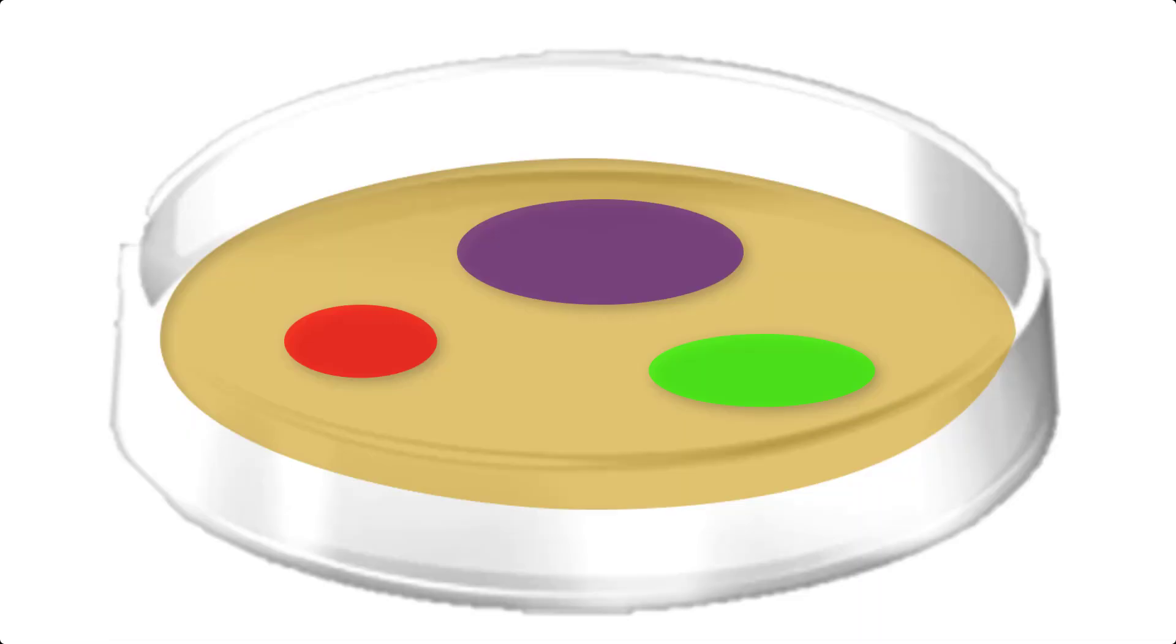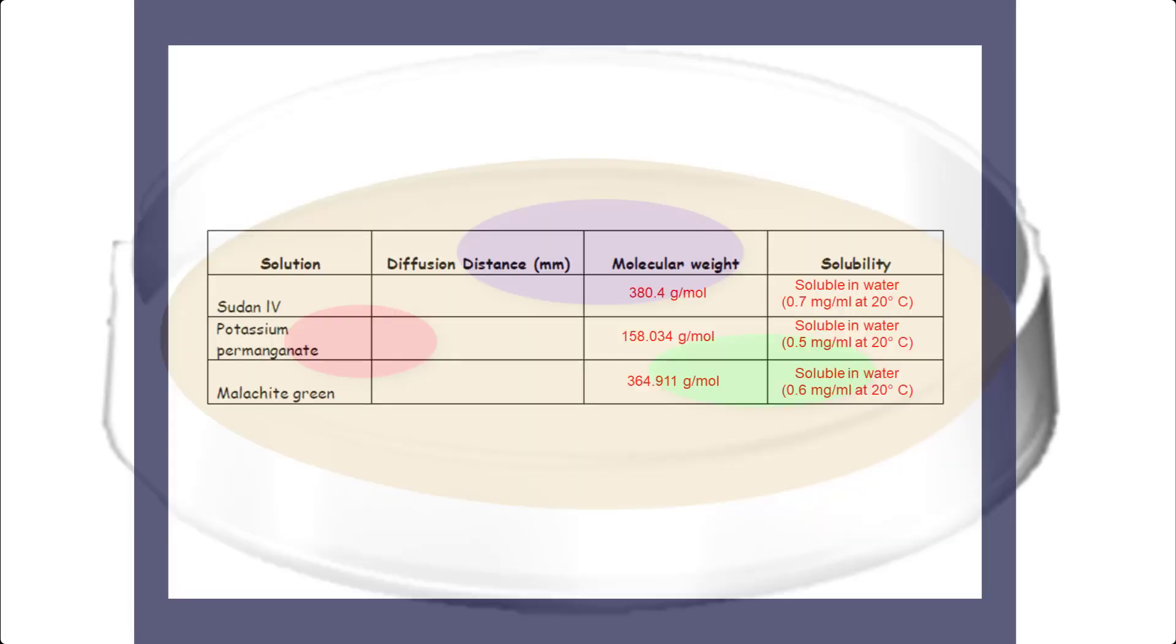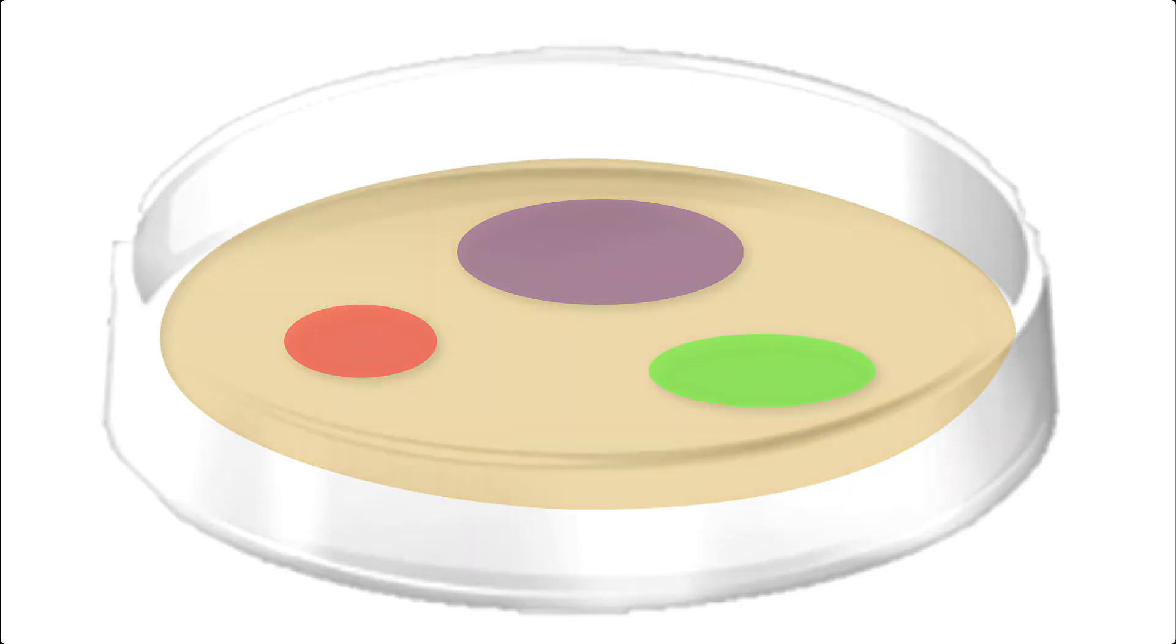We also saw that Sudan 4 was the smallest and diffused more slowly than malachite green or potassium permanganate. Looking at the data on your data table, can you explain why this might be the case? I'll let you answer this one on your own. When you're ready, let's move on.